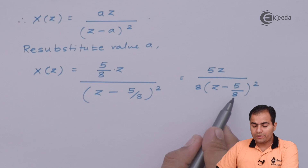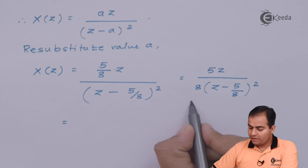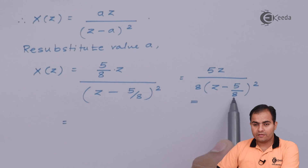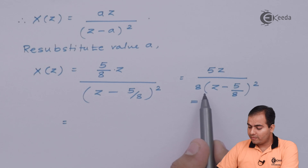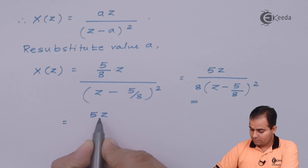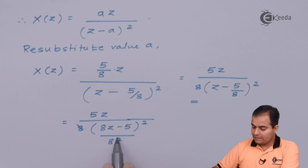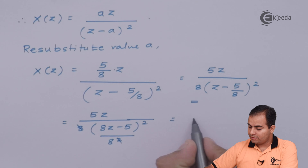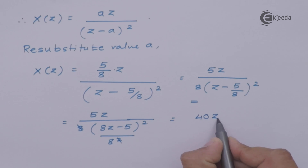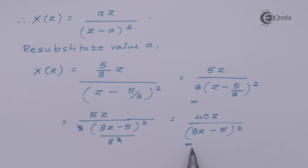If you want to take 8 outside the bracket, first cross-multiply it with z so the denominator has a complete 8, then take it outside the square. This 8 and the single 8 cancel, shifting 8 to the numerator side: 8 times 5 gives 40. This is our final result. You can stop at the earlier simplified form or this fully expanded form — both are acceptable.